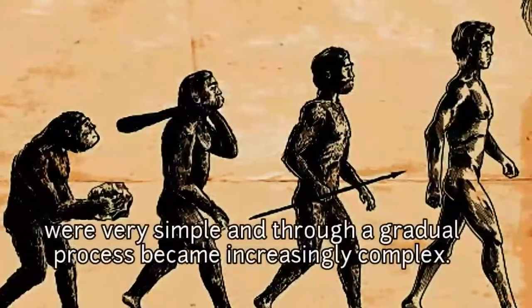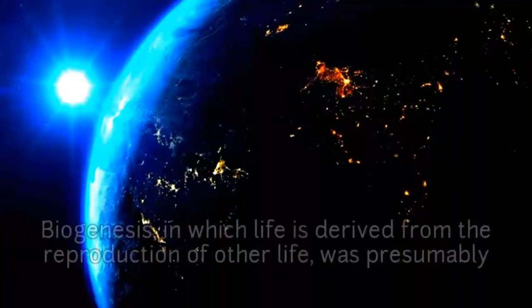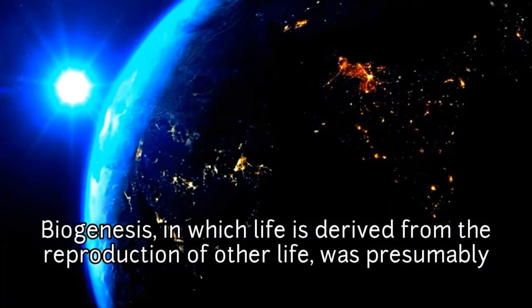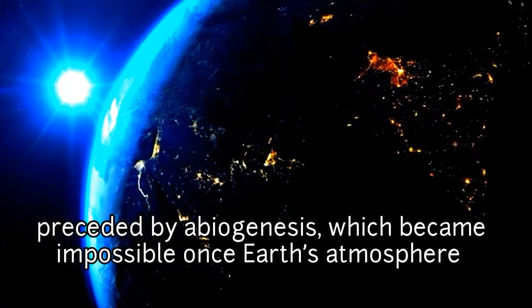Abiogenesis proposes that the first life forms generated were very simple and through a gradual process became increasingly complex. Biogenesis, in which life is derived from reproduction of other life, was presumably preceded by abiogenesis.